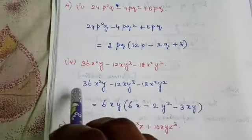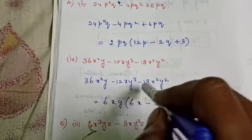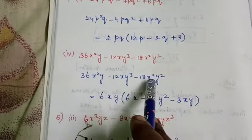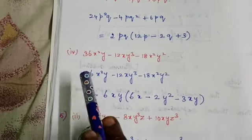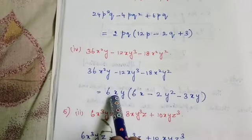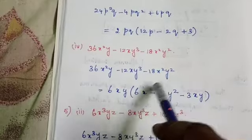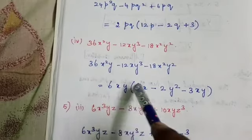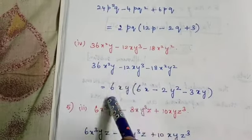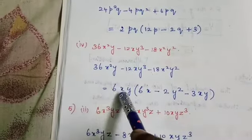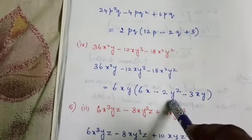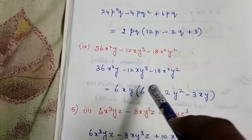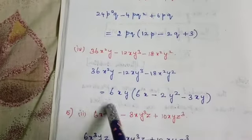Next: 36x²y - 12xy³ - 18x²y². The coefficients 36, 12, and 18 all have 6 as common — take out 6. For x: x², x, x² — smallest is x, take out x. For y: y, y³, y² — smallest is y, take out y. Common factor is 6xy. Remaining: 36 ÷ 6 = 6, one x remains giving 6x; 12 ÷ 6 = 2, y³ minus one y gives y², so -2y²; 18 ÷ 6 = 3, one x and one y remain giving -3xy. Answer: 6xy(6x - 2y² - 3xy).